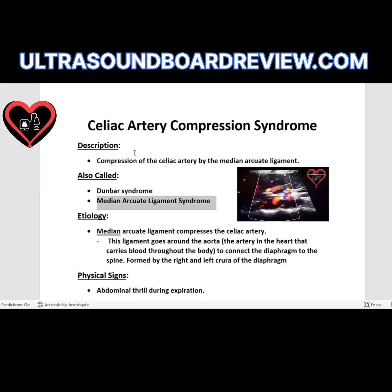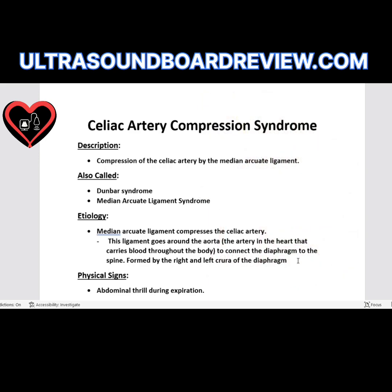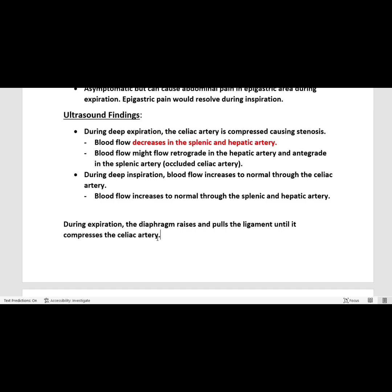This syndrome is the compression of the celiac artery by the median arcuate ligament. During expiration, the median arcuate ligament compresses the celiac artery, causing a narrowing and stenosis. This ligament goes around the aorta and connects the diaphragm to the spine. It is formed by the left crura of the diaphragm — during expiration, the diaphragm raises and pulls the ligament until it compresses the celiac artery.